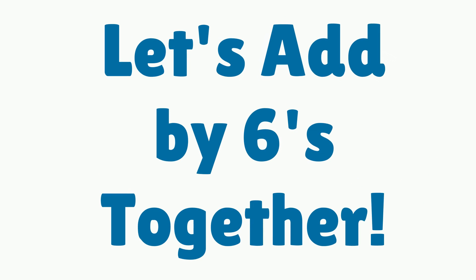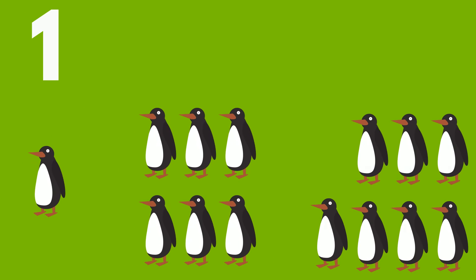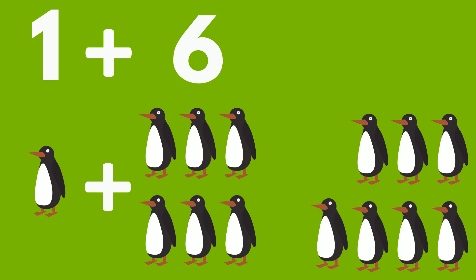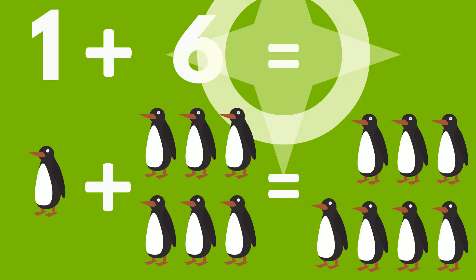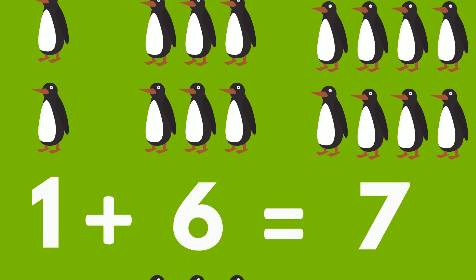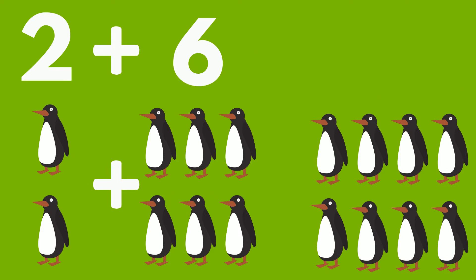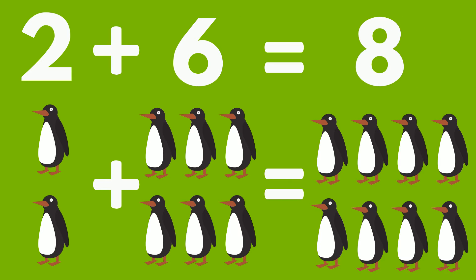Let's add by sixes together. 1 penguin plus 6 penguins equals 7 penguins. 2 penguins plus 6 penguins equals 8 penguins.